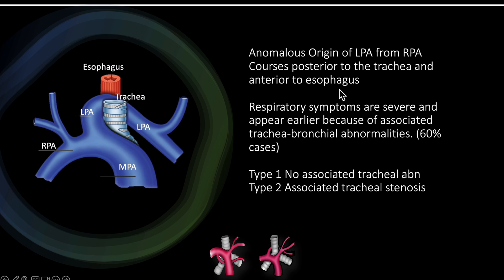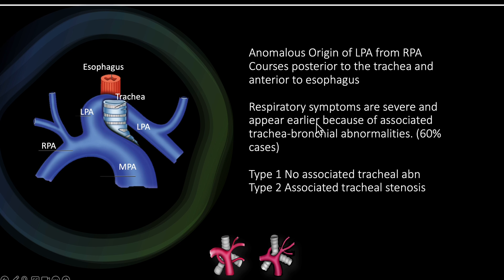This vascular ring is similar to the one formed by a double aortic arch, which is the commonest vascular ring seen. However, in the case of a pulmonary artery sling, respiratory symptoms occur far earlier and are more severe than in double aortic arch. The reason is that the pulmonary artery sling is associated with tracheal stenosis, so even if you correct this vascular ring surgically, the trachea remains stenosed and can create further problems.